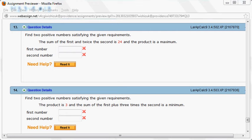Okay, let's look at homework 3.3, 3.4, number 13. So we have two positive numbers satisfying the sum of the first and twice the second is 24, and we want to maximize the product. Let's do that.